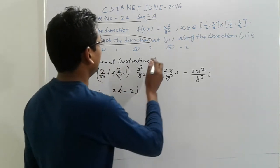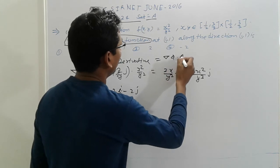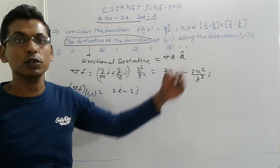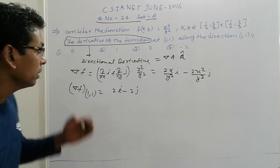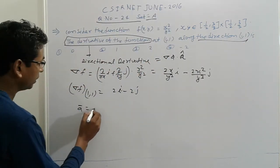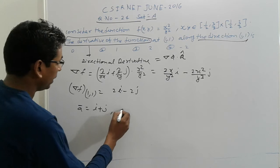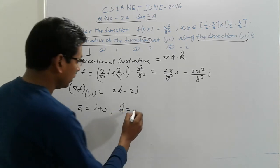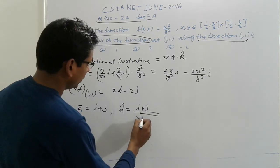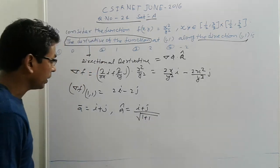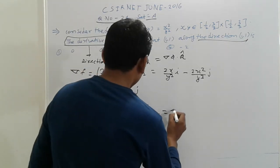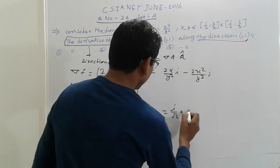The directional derivative is nabla f dot â. Here â is the unit vector in the given direction. The direction is i plus j, so â equals (i + j) divided by root two, giving i upon root two plus j upon root two.